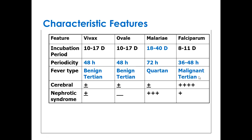This is malignant tertian fever. If the fever returns after 72 hours — on the fourth day — it becomes quartan fever. Plasmodium falciparum has a strong predilection for cerebral malaria as a complication. In case of plasmodium malariae, nephrotic syndrome can occur as a complication — a kidney disorder that causes the body to pass too much protein in urine, usually caused by damage to the glomeruli. It is an immune complex-mediated disease which can also cause acute renal failure.